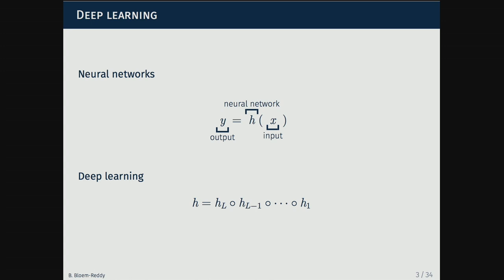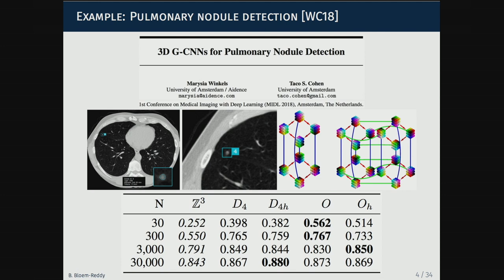So if we want symmetry, the first question is why do we want symmetry? We know that deep learning can solve every problem we want if you give it enough data and enough compute. But maybe we don't have lots of data, or the data is really expensive to obtain. Think about this example from a group in Amsterdam: they have 3D volumetric scans of lungs — pulmonary scans — trying to detect nodules as pre-cancer markers. These images are time and money intensive to obtain, and labeling them requires expert knowledge, so we're not going to get a dataset of millions of these. 30,000 in this table is already quite a big dataset for this type of data.